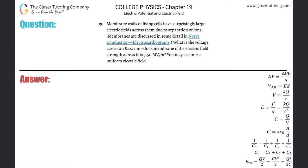Number 19: Membrane walls of living cells have surprisingly large electric fields across them due to separation of ions. What is the voltage across an 8 nanometer thick membrane if the electric field strength across it is...